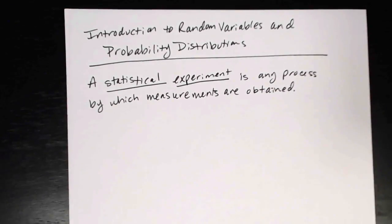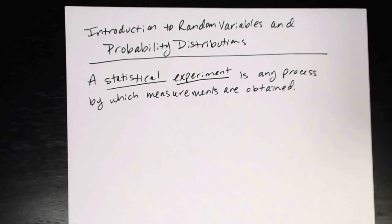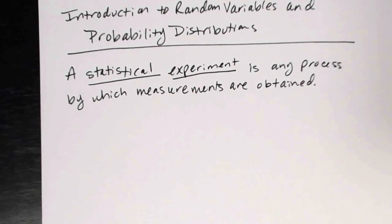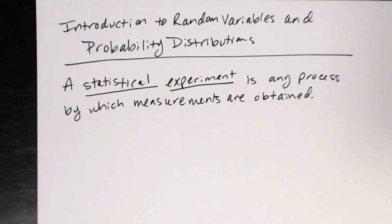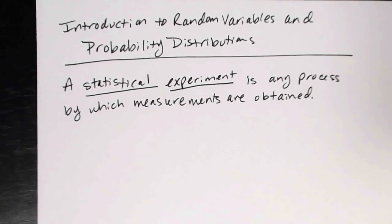This is not a particularly formal process — it's not the same as a designed experiment, where there has to be a treatment group and potentially a control group. When we're talking about statistical experiments, any process by which we obtain measurements can be construed as one. For example, rolling a die 50 times and recording the results, or measuring the heights of a bunch of trees — both are statistical experiments.